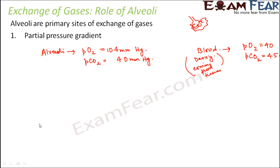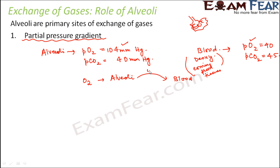Now, thinking about the concept of partial pressure gradient: the partial pressure of oxygen is higher in the alveoli (104) and lower in the blood (40). Therefore, oxygen should move from alveoli to blood — oxygen moves across the alveolar membrane. For carbon dioxide, the partial pressure is 40 in alveoli and 45 in the blood, meaning it is more in the blood. Therefore, carbon dioxide moves from blood to the alveoli.